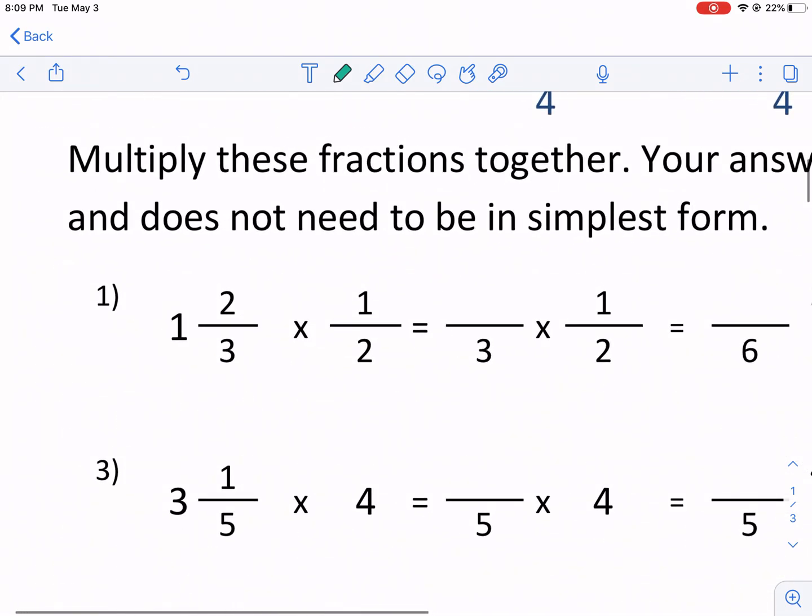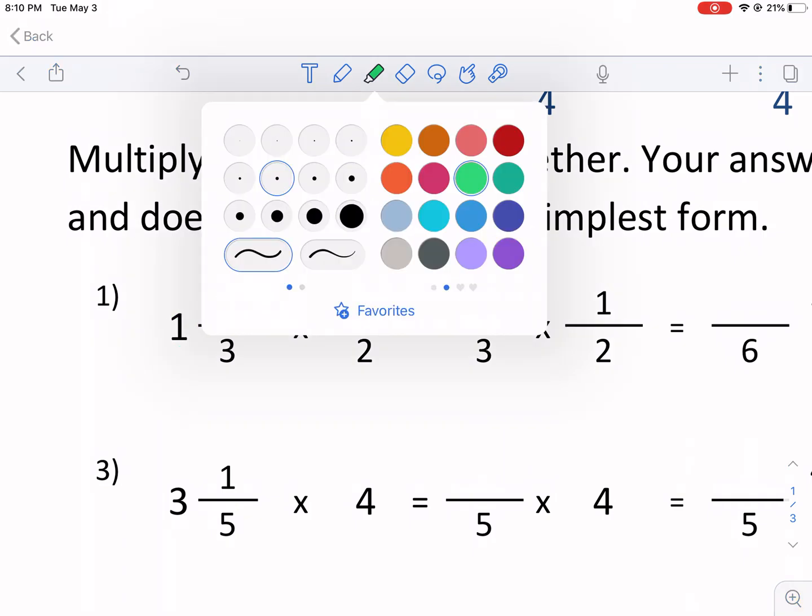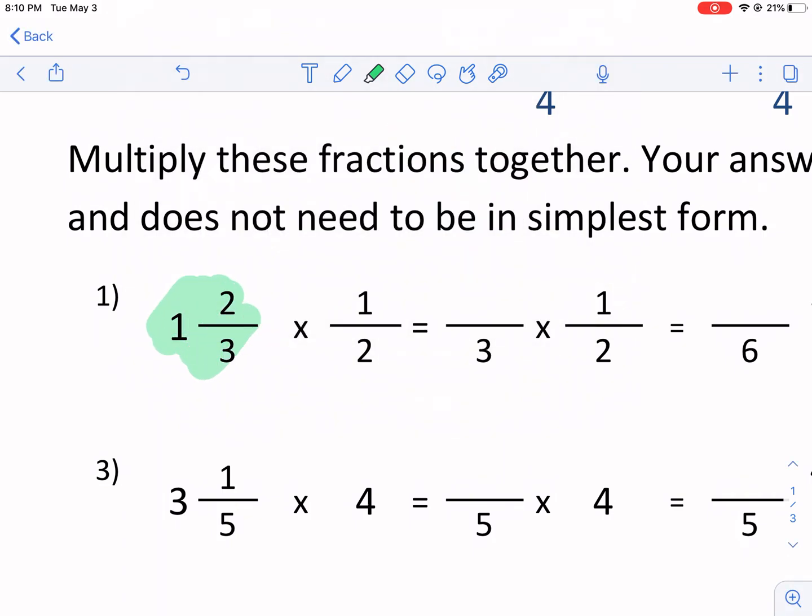The first one starts off, and I'll highlight this in neon green. This is the mixed fraction right there, one and two thirds, and we're multiplying it by a non-mixed fraction. Even if you were multiplying by another mixed fraction, you just want to make sure they're listed as improper fractions. That means no whole numbers out in front. You just want them to have a numerator and denominator.